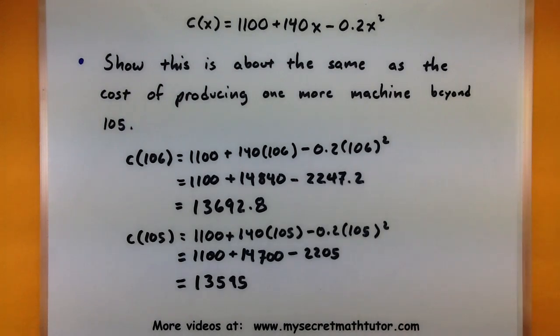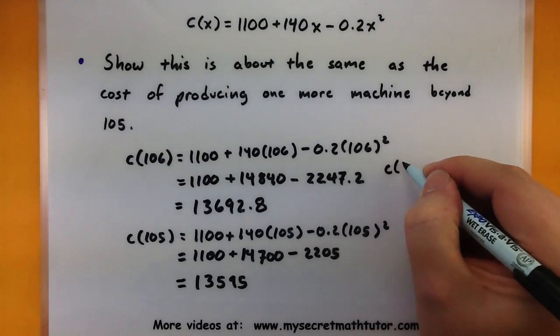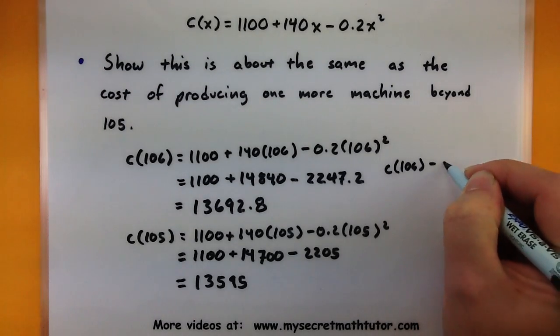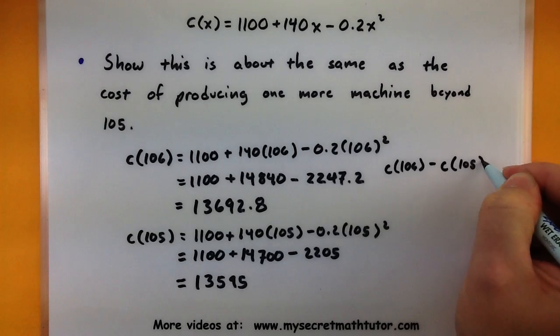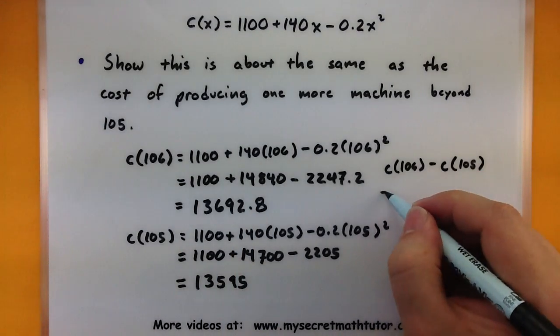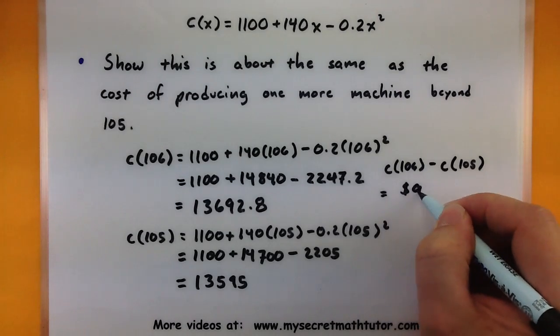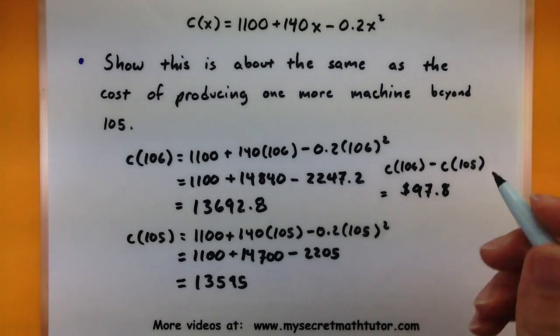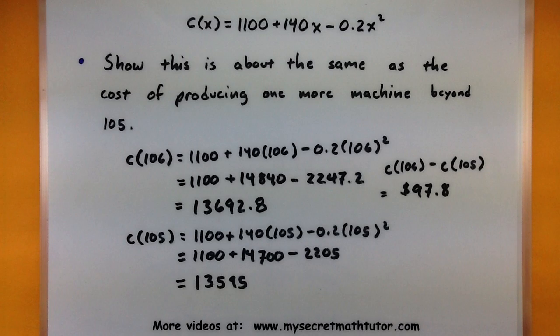So let's subtract these two and figure out what the difference in cost is. So taking my value here, subtracting this, I would get $97.80. And notice how that's about the same value that we got before. So remember that for marginal cost, we're simply looking at the derivative of cost.